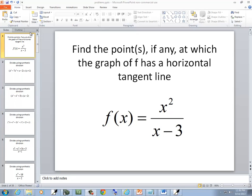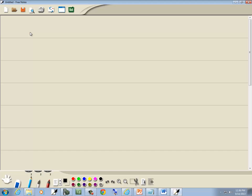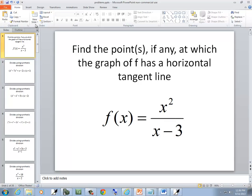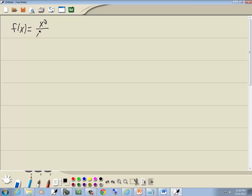In this problem, we want to find the points, if any, at which a graph of f has a horizontal tangent line. We've got f of x is equal to x squared over x minus 3.